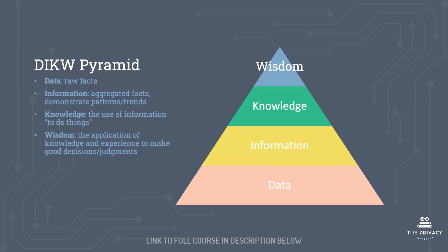The DIKW pyramid stands for data, information, knowledge, and wisdom. Data we can understand as raw facts. Information is aggregated facts that demonstrate a pattern or trend. Knowledge is the use of information to do things. And wisdom is the application of knowledge and experience to make good decisions or judgments. Data is the basis for everything that moves up — information, knowledge, and wisdom.